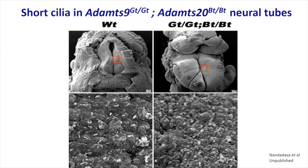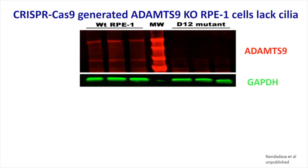In another pair of knockouts, ADAMTS-9 and ADAMTS-20 — the most evolutionarily conserved of all proteases — we see a profound effect on mouse development. In addition to defects in the heart and limbs, there is an open neural tube. Looking at the cilia in the neuroepithelium, the mutant neural tube cells have extremely short or absent cilia. So this is a secreted protease essential for ciliogenesis and it mediates sonic hedgehog signaling, which is required for neural tube closure.